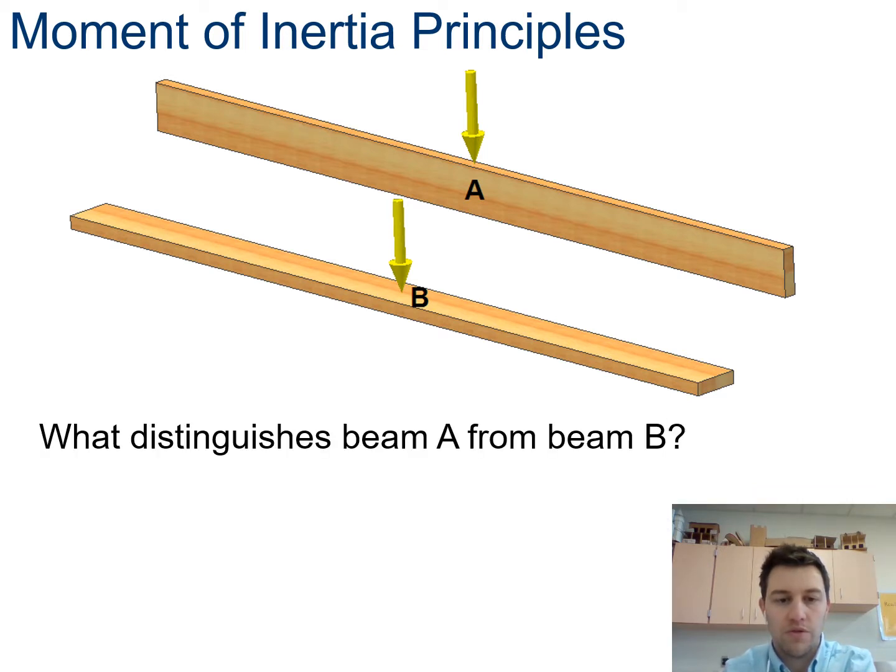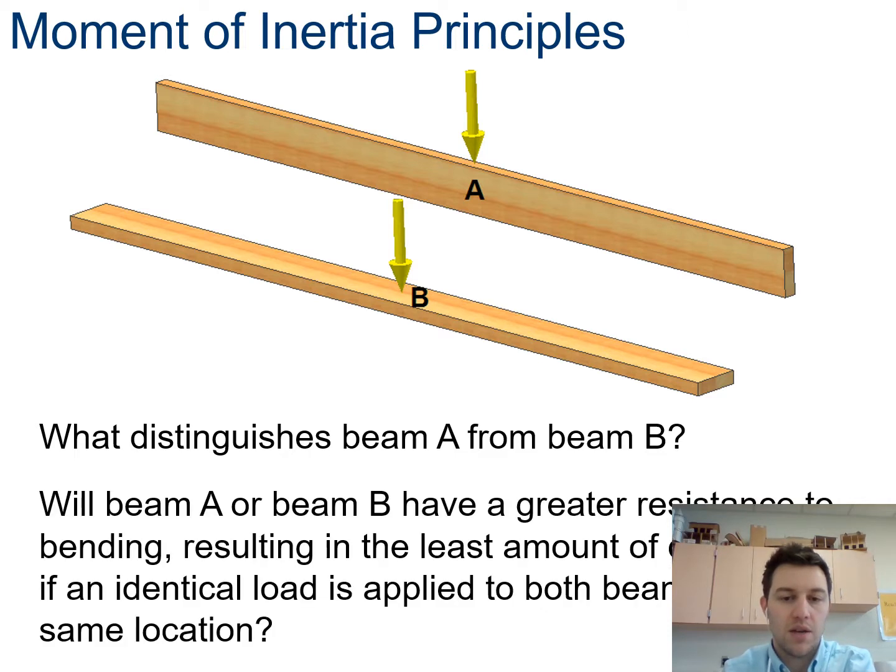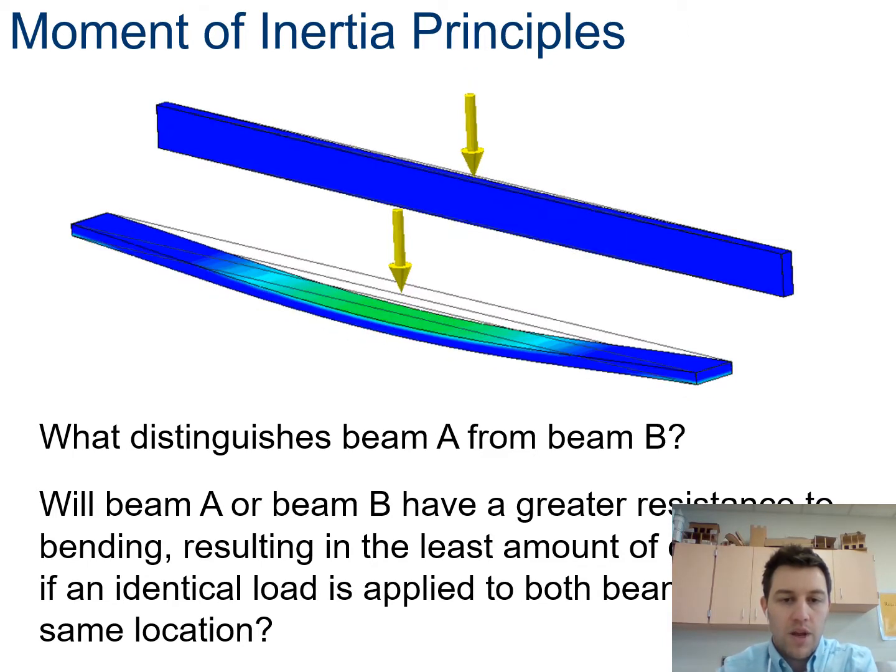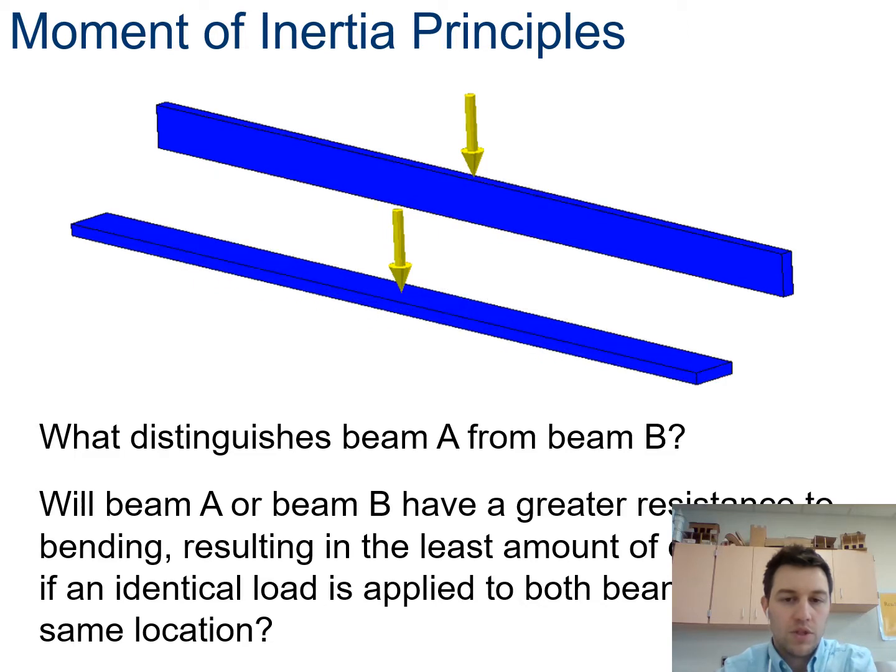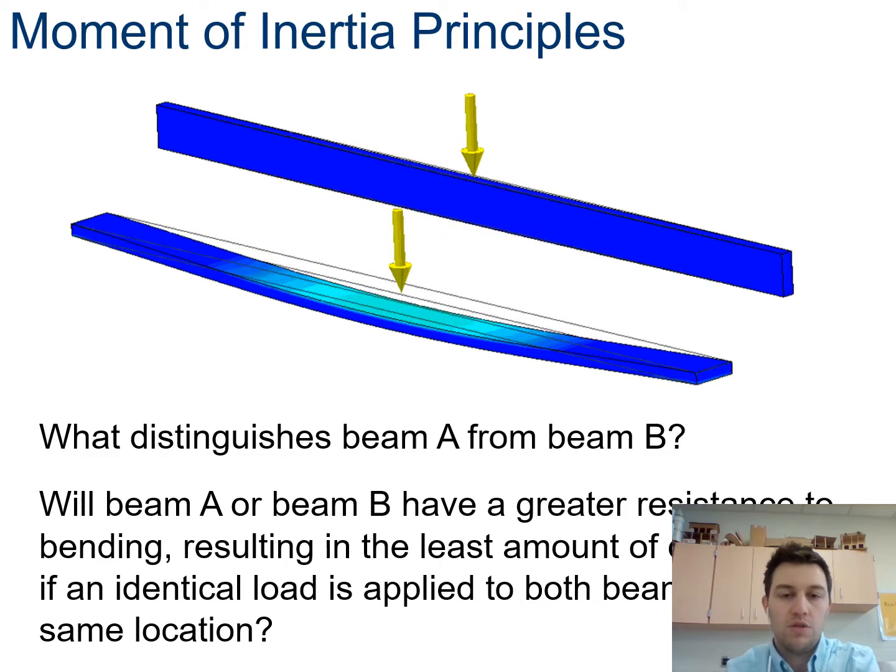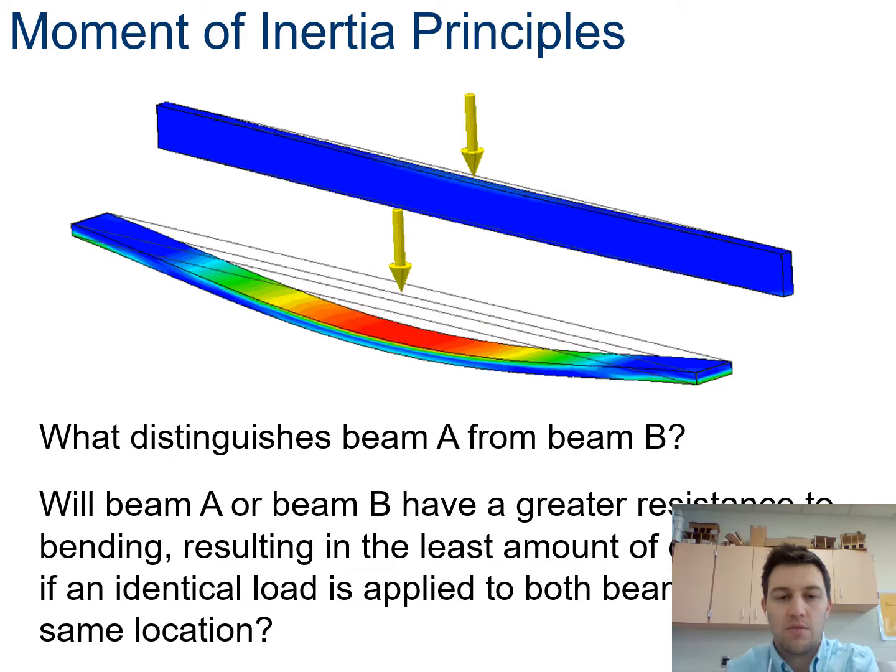So the only distinguishing feature from A to B is that A is vertical and it's considered a joist, B is horizontal. What happens here? So if we do what's called the stress test, this is something you could do in Autodesk Inventor or any other CAD software. It shows the red shows higher deformation. Well the plank deforms more or bends more than the joist does, and that's because of moment of inertia.